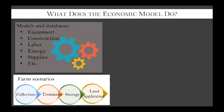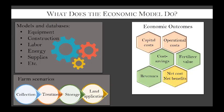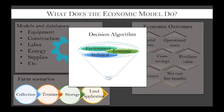These different models and databases address manure management processes from collection, treatment, storage, and land application, and ultimately the economic outcomes. Those economic outcomes include annualized capital costs, annual operational costs, cost savings, the fertilizer value of manure nutrients used on farm, revenues from the sale of excess manure product or energy, and net costs and net benefits. These economic results will feed into the decision algorithm along with environmental and technical information to provide recommended alternatives to the farmer.